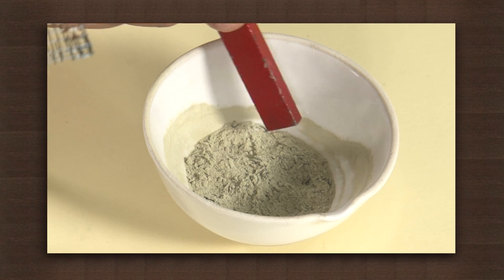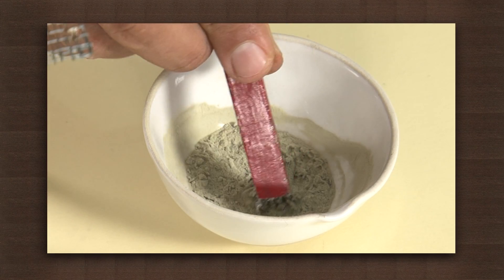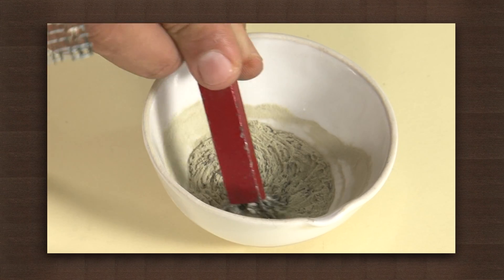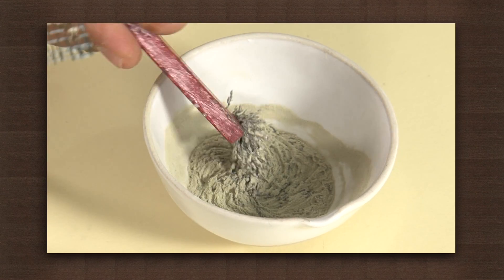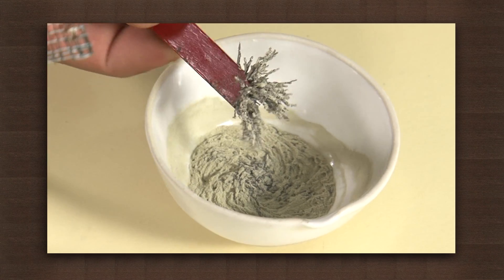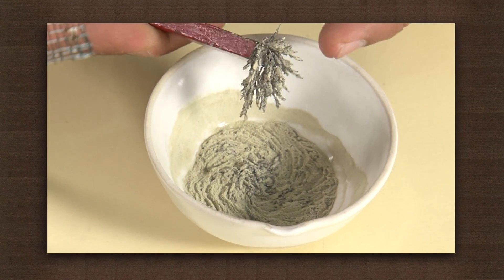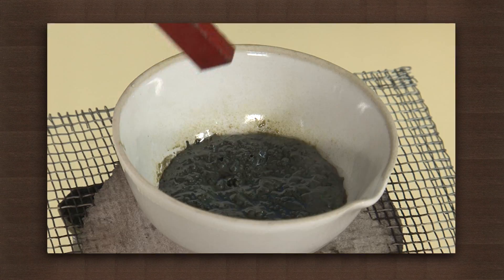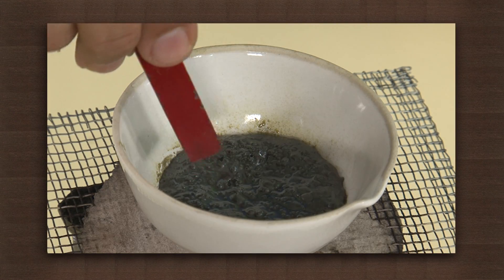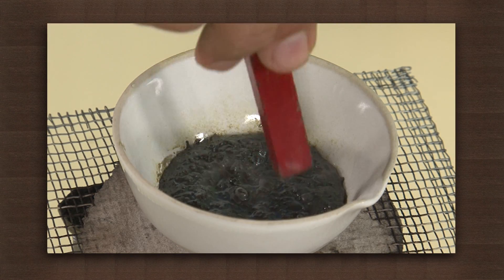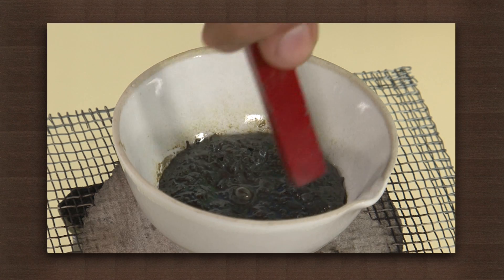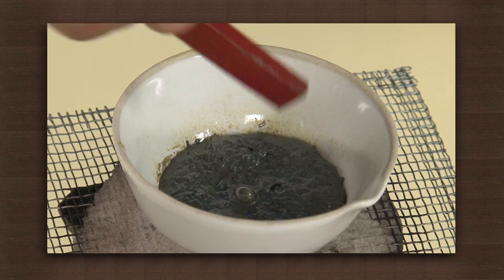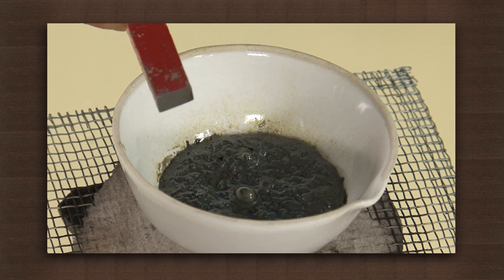Now if you take a magnet to the two crucibles, you notice the magnet attracts the iron filings from the mixture, but not from the compound, because iron has lost its properties on combining with sulphur to form iron sulphide.